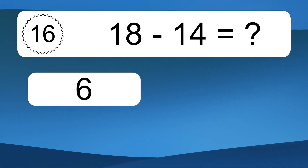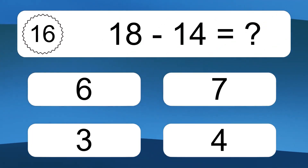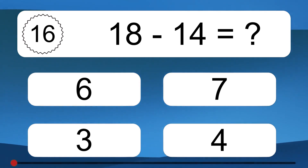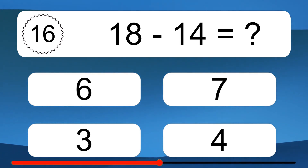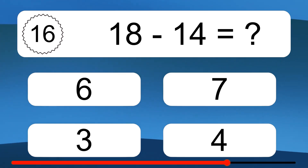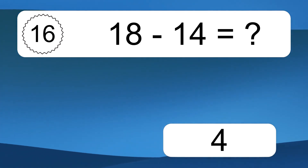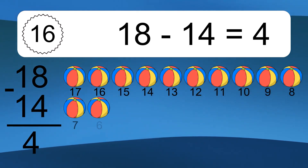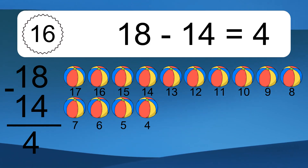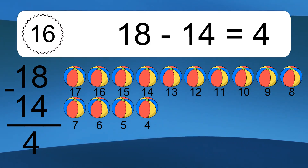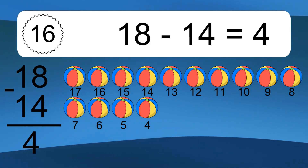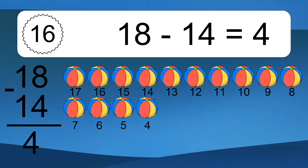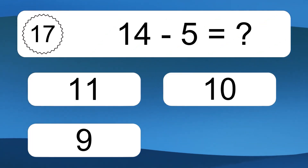18 minus 14 equals what? 18 minus 14 equals 4. Let's count it: 17, 16, 15, 14, 13, 12, 11, 10, 9, 8, 7, 6, 5, 4.